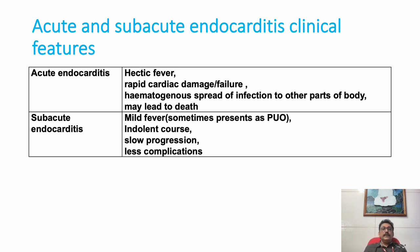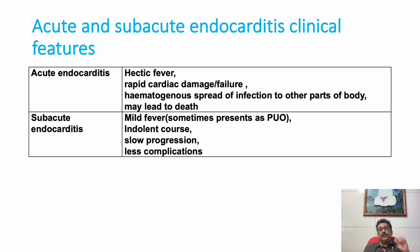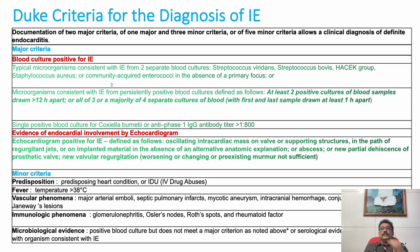Acute infective endocarditis presents with high-degree fever, rapid cardiac failure, hematogenous spread to other organs, and sometimes multi-organ dysfunction leading to death. Subacute infective endocarditis has a slow course — the patient mainly presents with PUO, which can be due to subacute infection or partly treated IE. The patient has a slow progression with fewer complications.